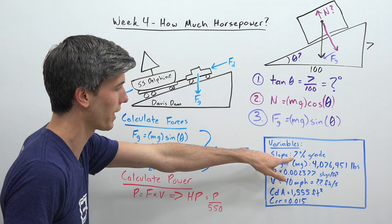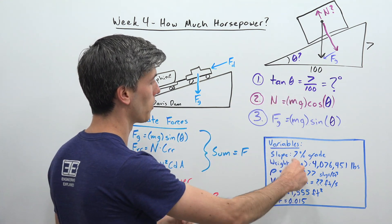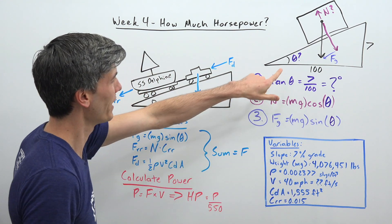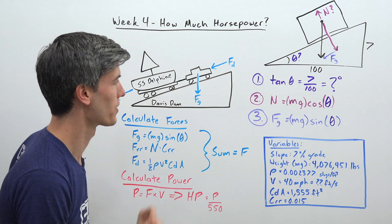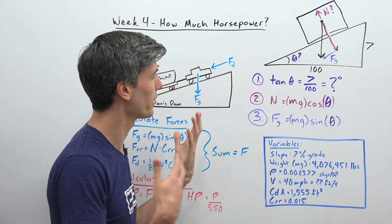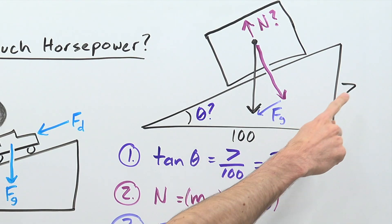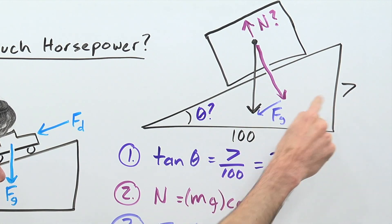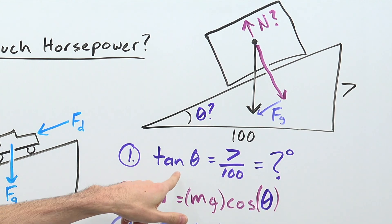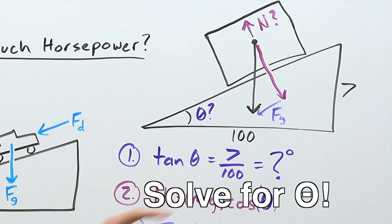So we know it's a 7% grade at its steepest point. So that's the point we're going to analyze and we need to convert this into degrees. You can either use the internet and find out what that quick conversion is or you can do the math. Tangent of theta is equal to 7 divided by 100, that 7 over 100 is your 7%, and that will give you your theta in degrees.